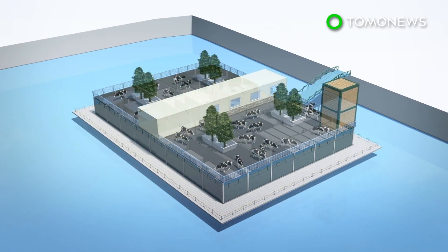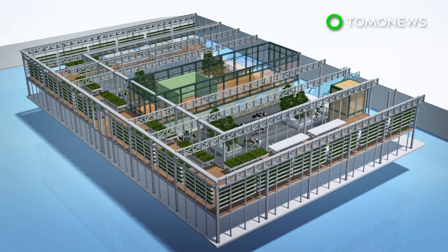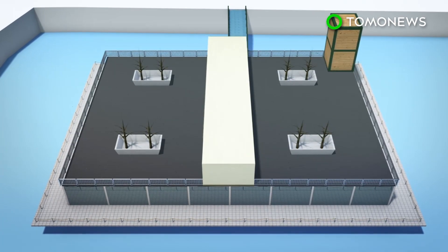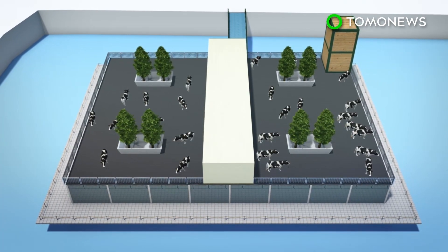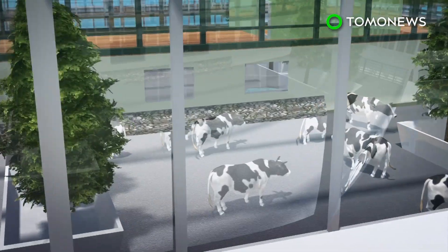According to Business Insider, the three-level, 89-by-89-foot complex will be floating in the water in Rotterdam. The bottom level of the facility will house the processing and packaging machinery, with the cows and milking robots on the second level, while the third floor will grow clover and grass for the cows to eat.